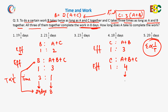Similarly, the time ratio of C to A plus B plus C becomes 4 is to 1. Here, 1 is equivalent to 8 days, so 4 is equivalent to 32 days. Therefore, C alone takes 32 days to complete the work.